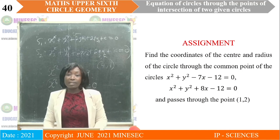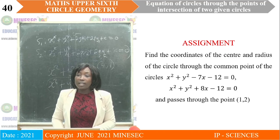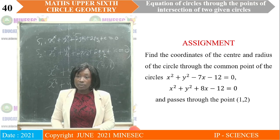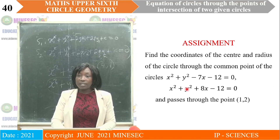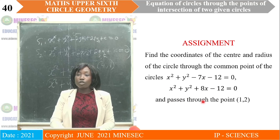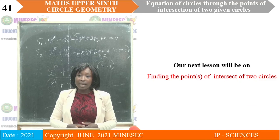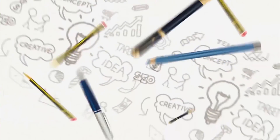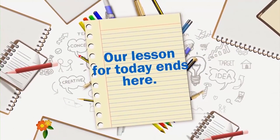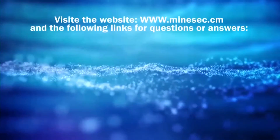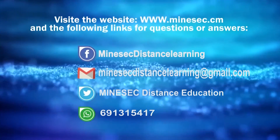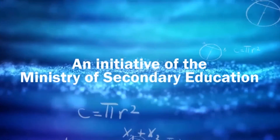For the assignment: find the coordinates of the center and radius of the circle through the common points of the two given circles and which passes through the point (1, 2). We have come to the end of this lesson. The next lesson will be titled: Finding the Points of Intersection of Two Circles. Thank you.